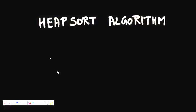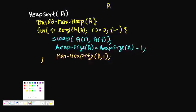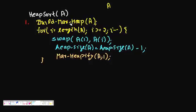In this lecture, we are going to learn about a very famous sorting algorithm known as Heapsort. The algorithm takes an integer array A. The first thing it does is convert that integer array into a Max Heap. Building a Max Heap from an array was shown in the previous lecture.